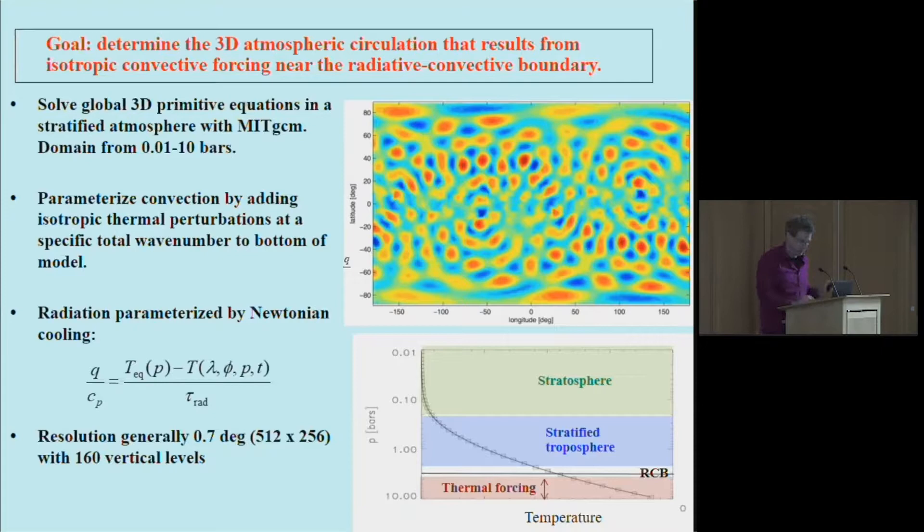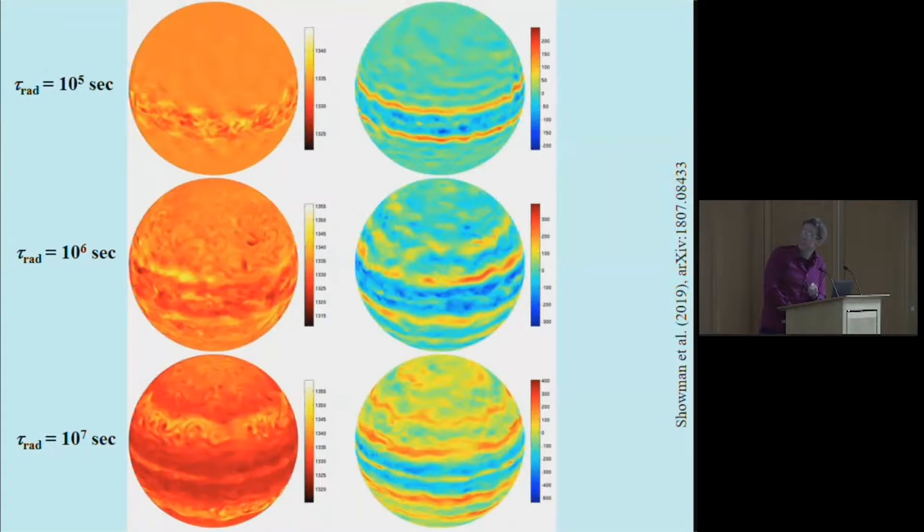This shows several calculations of the flow, three different simulations using different values of the radiative time constant. As I mentioned, radiation acts as a damper in this system; radiation is removing or trying to damp out horizontal temperature variations. That's opposite of the role of radiation on a hot Jupiter. The forcing then is due to the perturbations by convection at the base of the model.